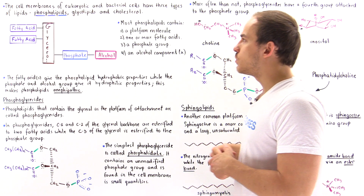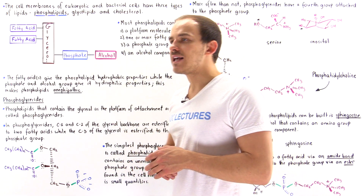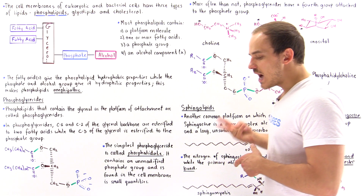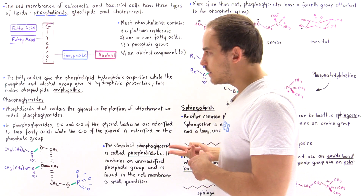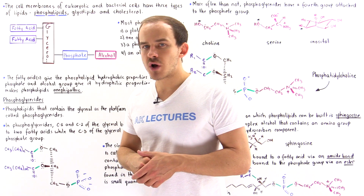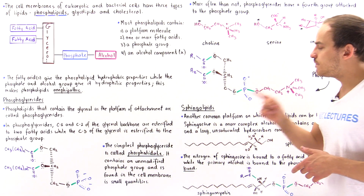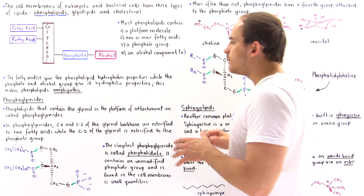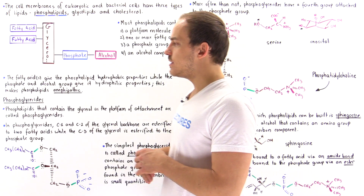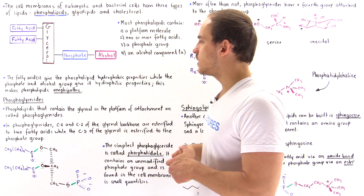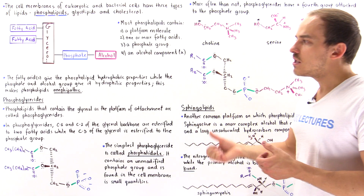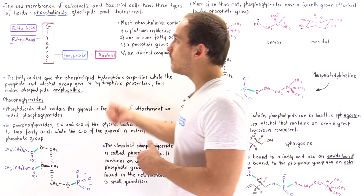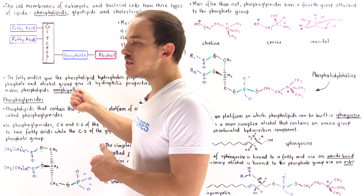In this lecture we're going to focus only on phospholipids. There are two types of phospholipids: phosphoglycerides and sphingolipids. We'll see exactly what the difference is between these two in a moment. First, let's discuss the constituents — the components that make up any phospholipid.